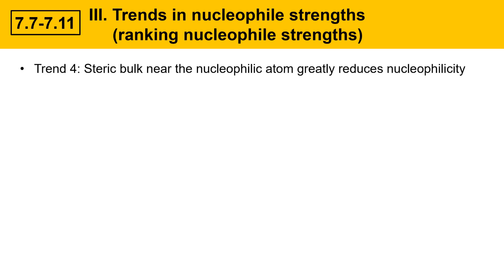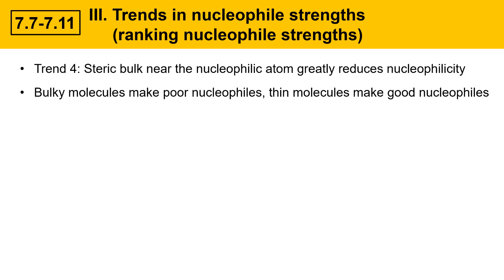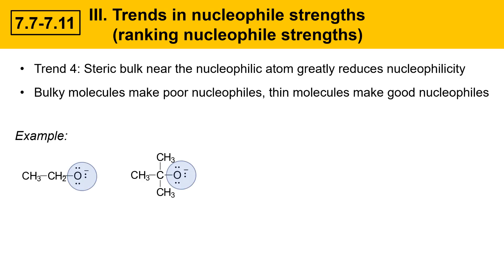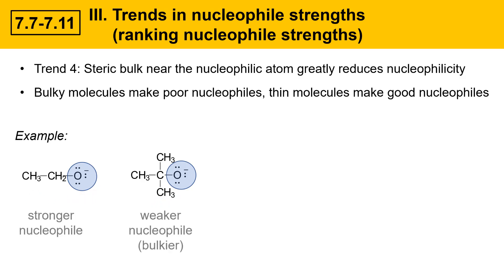A fourth trend is that steric bulk near the nucleophilic atom greatly reduces nucleophilicity — bulky molecules make poor nucleophiles, while thin molecules make good nucleophiles. Here are two oxygen nucleophiles that are both quite strong bases. However, the one on the right is much bulkier, with a lot of substituents around the O⁻ that can get in the way of approaching a carbon to attack it. The bulkier molecule on the right is therefore a weaker nucleophile, while the less hindered molecule on the left is a much better nucleophile.